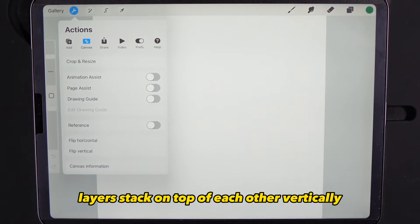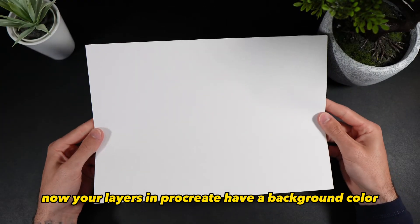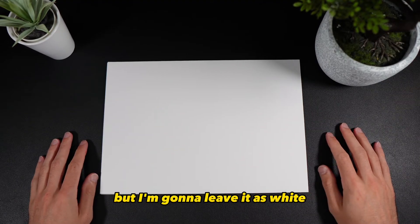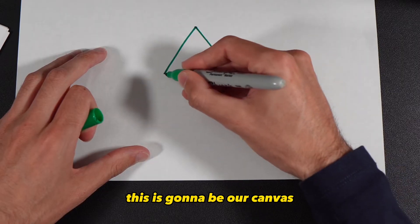Layers stack on top of each other vertically just as if you were to stack paper on top of each other. Your layers in Procreate have a background color, usually white, and you can change this to any color you want. This piece of paper is going to be our canvas.